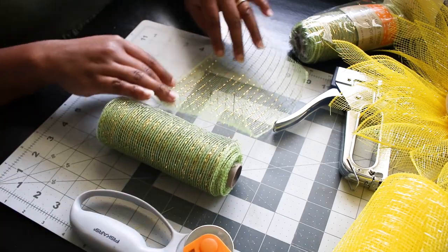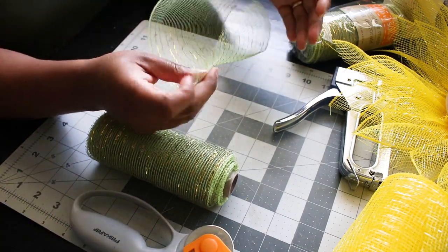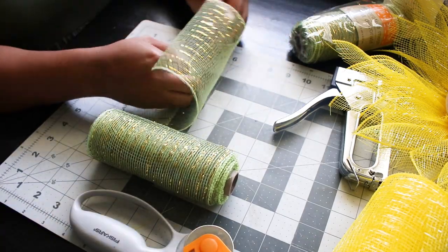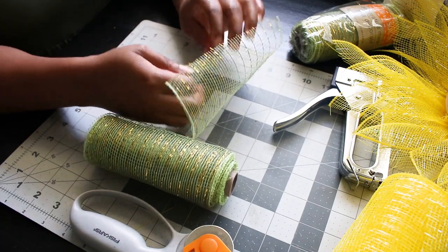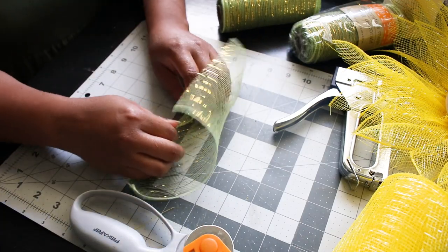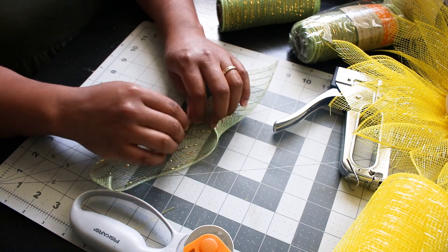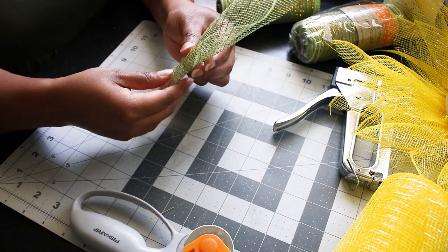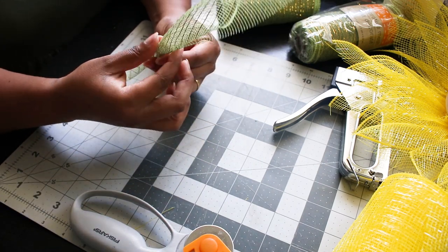So I used some green mesh as well. And this roll is from Dollar Tree. With this one, I cut a slightly smaller piece, and I kind of rolled it, instead of pinching, to get an almost cone-shaped look that you see here.